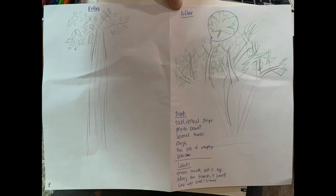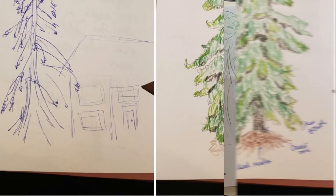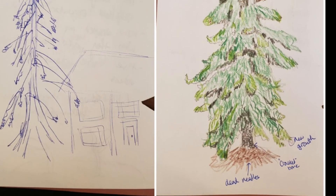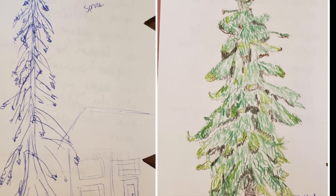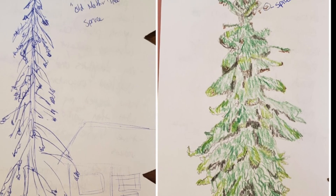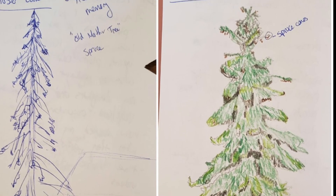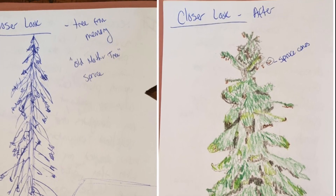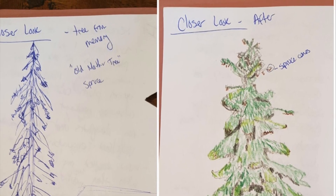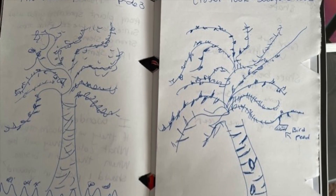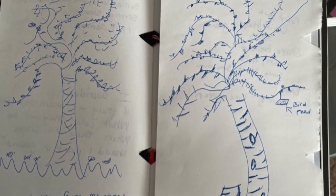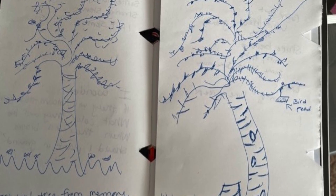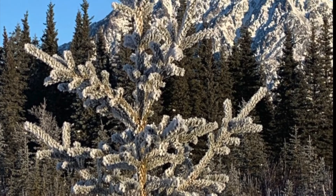Next, draw your tree again. Using the observations you recorded in your student page, add as much detail to your drawing as you can. Compare and contrast your two different tree drawings — what do you notice? Compare your drawings to other people's drawings. What patterns do you notice? What parts are similar? What structures are different?